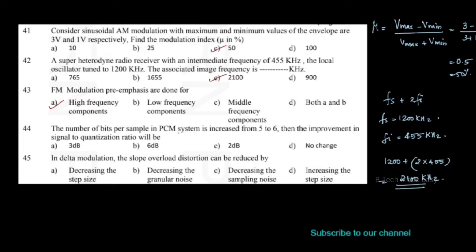The number of bits per sample in a PCM system is increased from 5 to 6. Then the improvement in signal-to-quantization noise ratio will be — this is a theory question. When the number of bits per sample increases from N to N+1, the improvement in signal-to-quantization noise ratio is 6 dB.